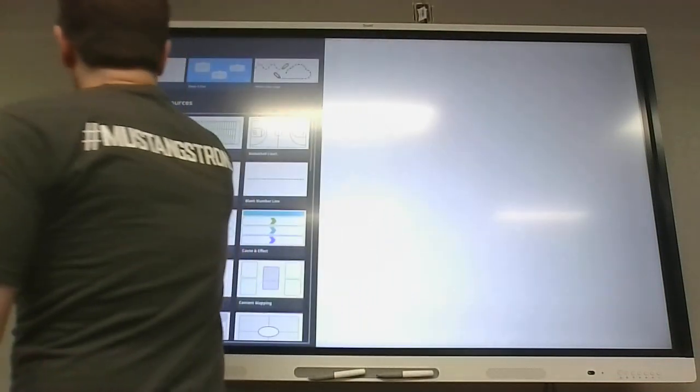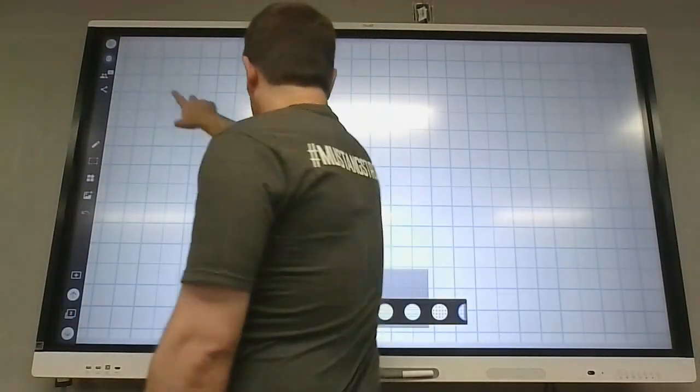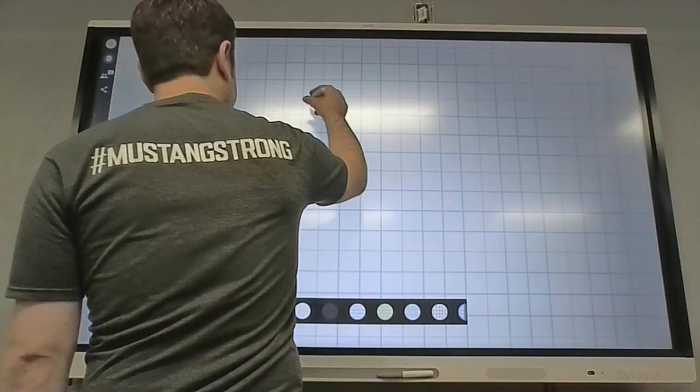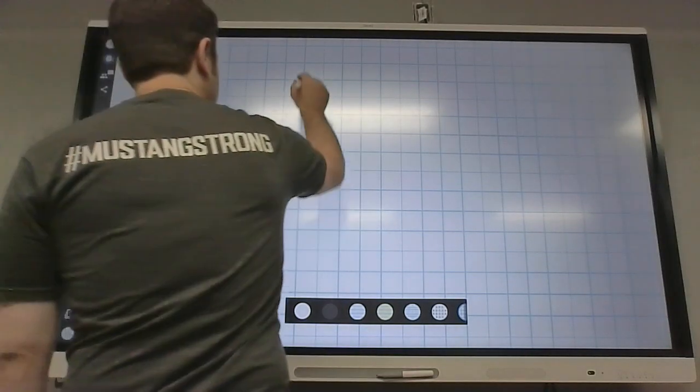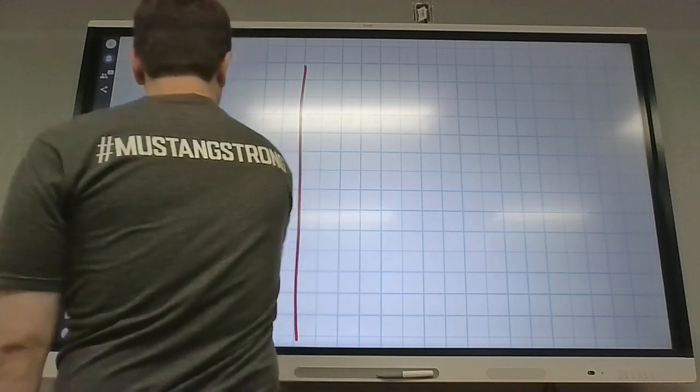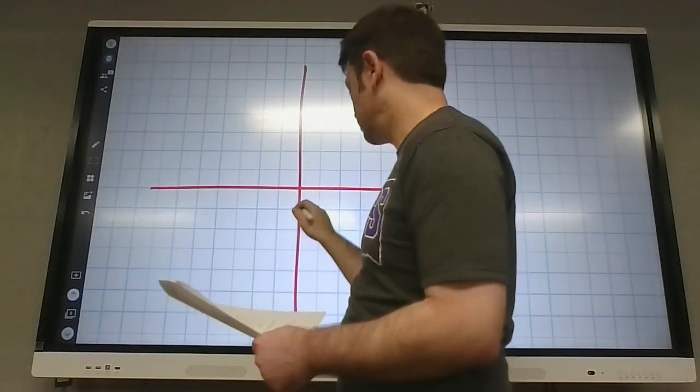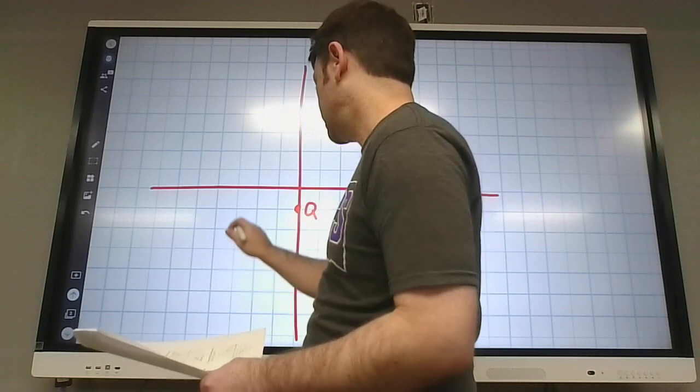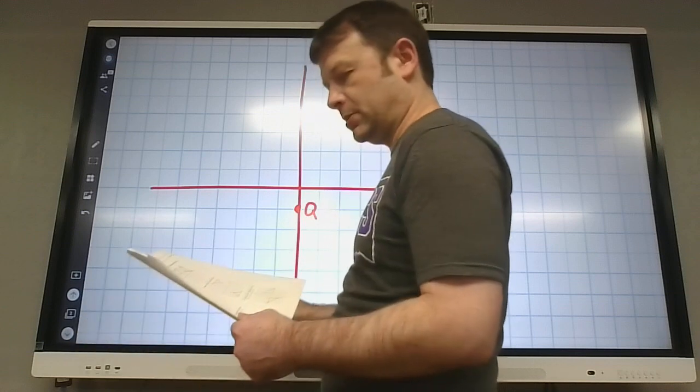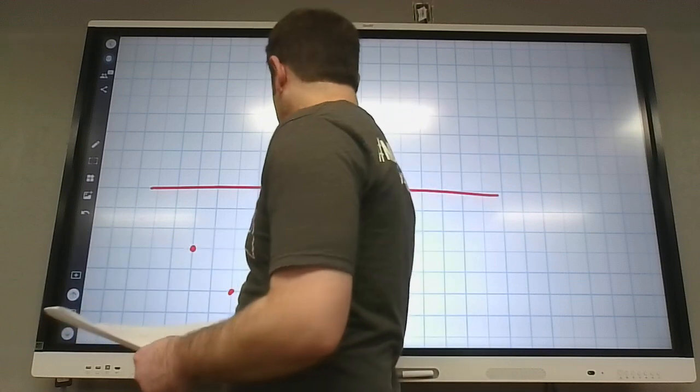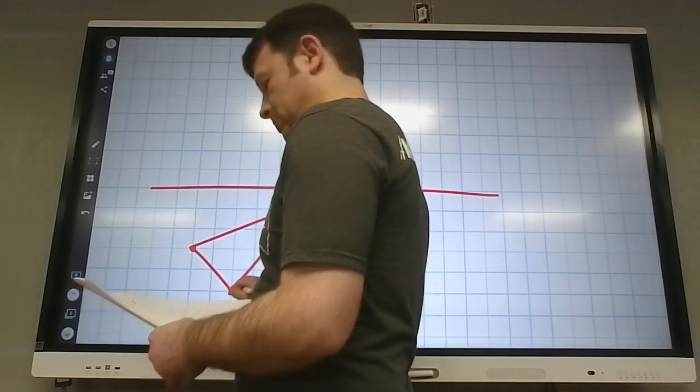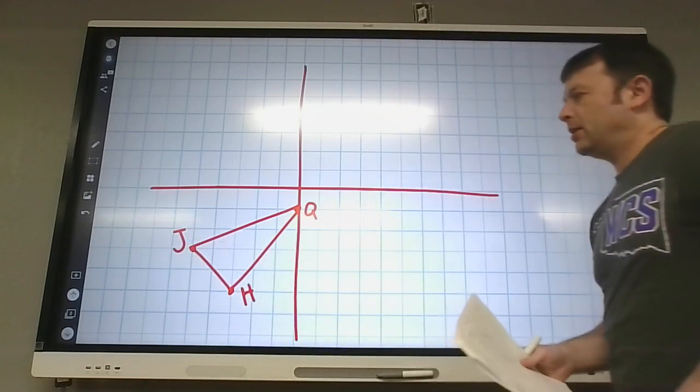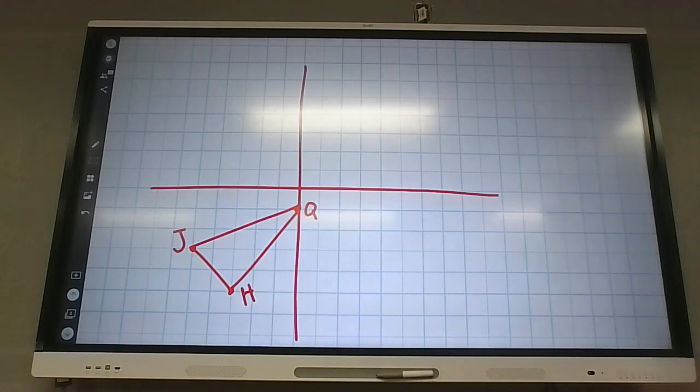If I go to graphic right here. All right, 180 degree rotation. H is negative 3, negative 5. Is this right now? No. Okay. Because we're not rotating around Q. We're rotating around the origin.